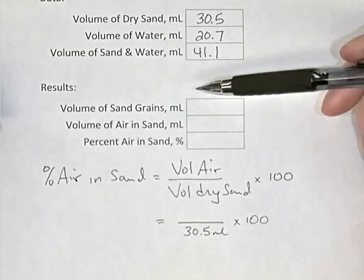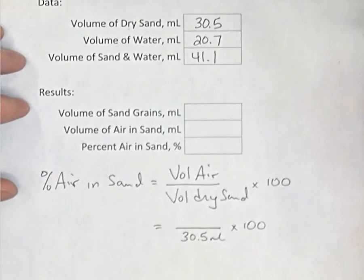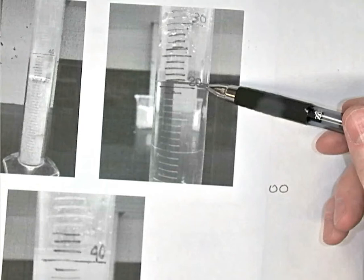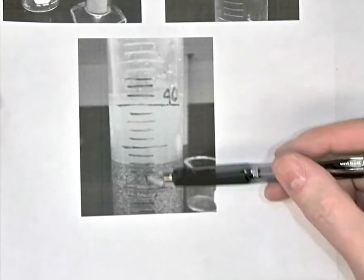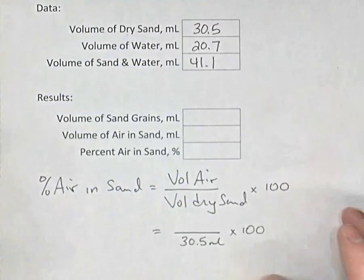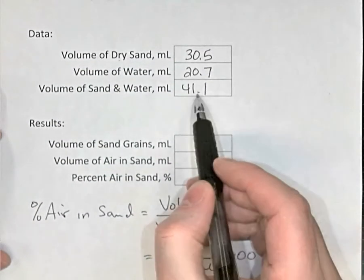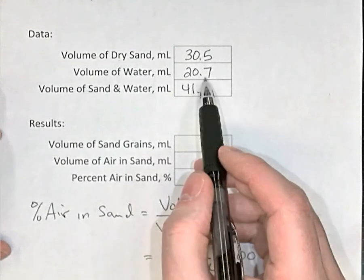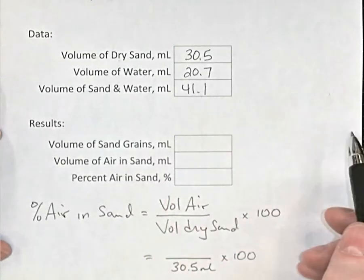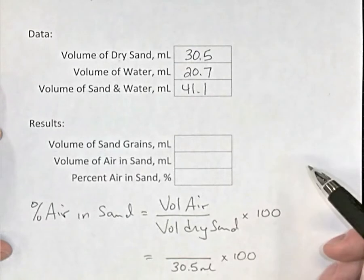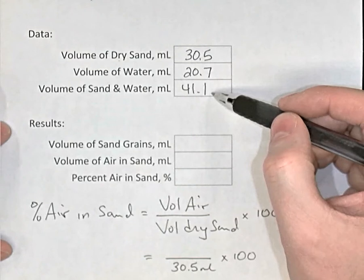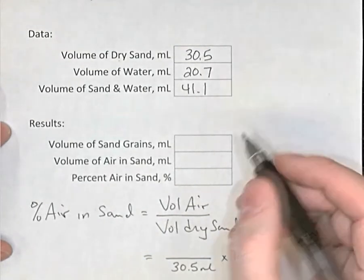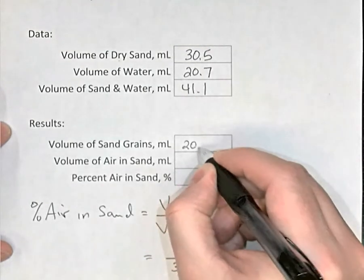We start by finding the volume of sand grains. Now you remember that the sand grains were causing the level of the water, which was originally just over 20 milliliters, to get displaced up to over 40 milliliters. The sand grains were displacing the water. So if we measure, take the final level of the water, 41.1 mils, and we subtract the original level of the water, 20.7 mils, the difference will be the volume of those sand grains, which are displacing the water. So 41.1 minus 20.7 gives me 20.4 milliliters, which will be the volume of the sand grains alone.